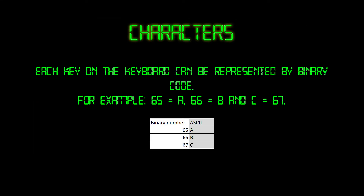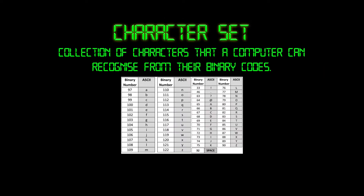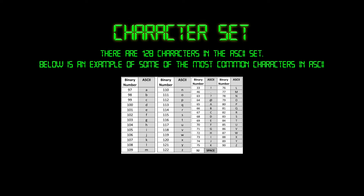Each character on the keyboard can be represented by binary code. For example, 65 is A, 66 is B, and 67 is C. A character set is a collection of characters that a computer can represent. There are 128 characters in the ASCII set. Below is an example of some of the most common characters in ASCII.